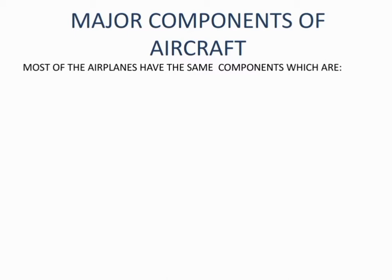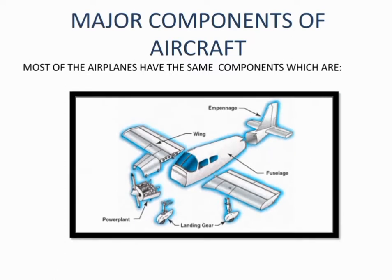Assalamu alaikum friends, hope you are doing well. Welcome back to my channel, Abitre Speaks. In this video we will describe the major components of aircraft. Most airplanes have the same components, which are fuselage, empennage, power plant, landing gear, and wings.